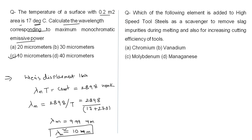Which element is added to high-speed tool steel as a scavenger to remove slag impurities during melting and to increase cutting efficiency? Vanadium is added to achieve these properties in the construction and manufacturing of such tools.